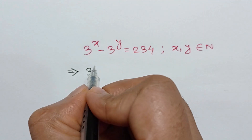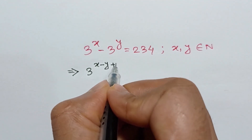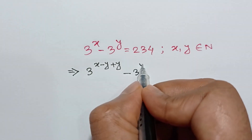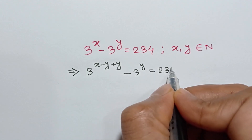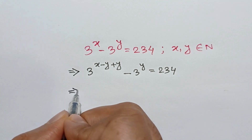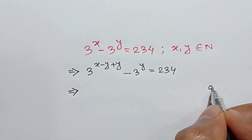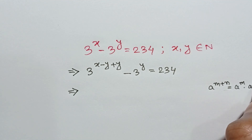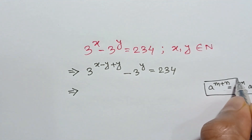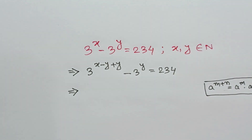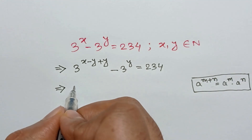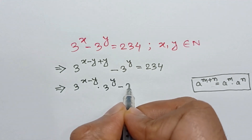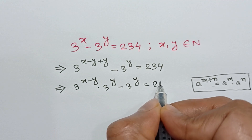3 to the power x can be written as x minus y plus y, so applying the formula a to the power m plus n equals a to the power m times a to the power n, we can write 3 to the power x minus y times 3 to the power y minus 3 to the power y is equal to 234.